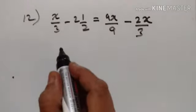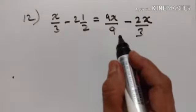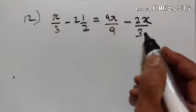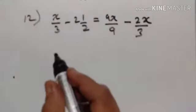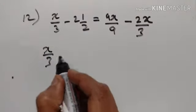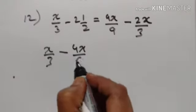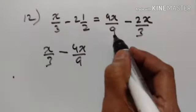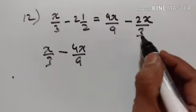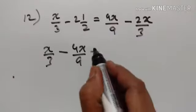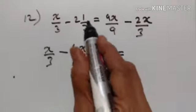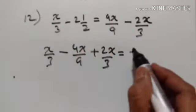12th problem. Let us transpose 4x upon 9 and minus 2x upon 3 to the left side. So x upon 3 minus 4x upon 9 plus 4x upon 9 becomes minus 4x upon 9, and minus 2x upon 3 becomes plus 2x upon 3, is equal to minus 2 and a half, which becomes plus 2 and a half.